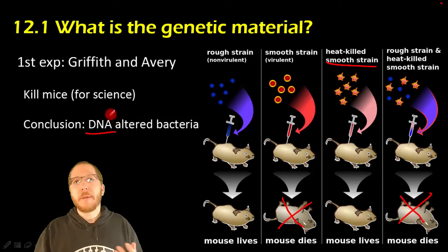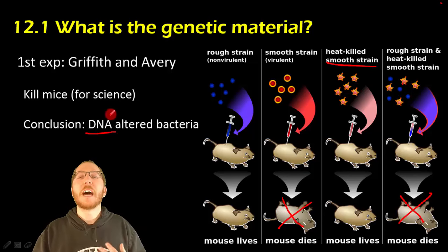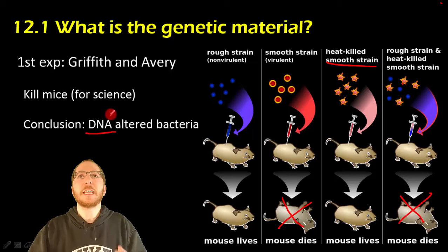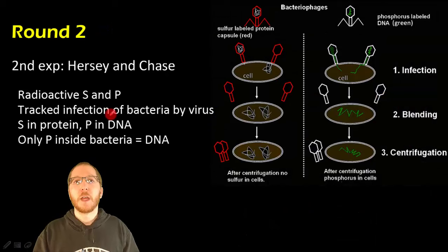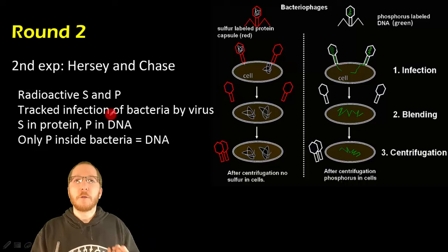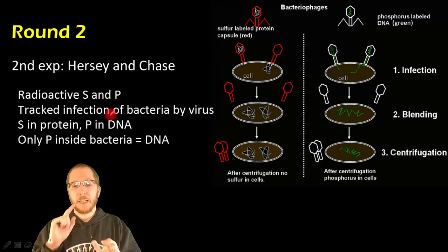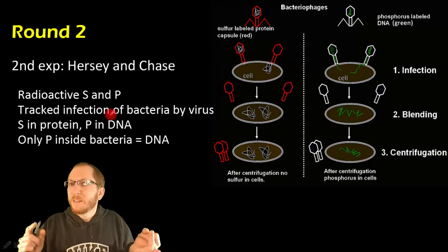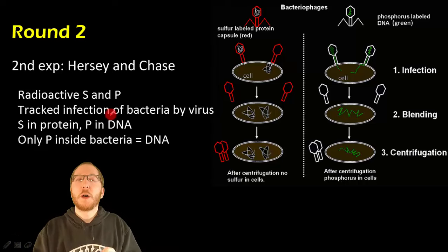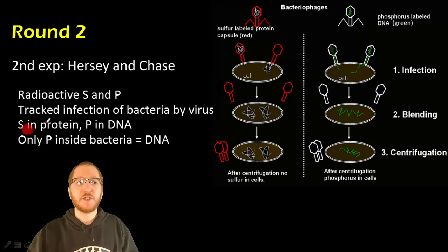People didn't automatically believe this — it was like strike one. Many still wanted more evidence because proteins seemed more diverse and a better candidate for genetic material. Scientists Hershey and Chase came along and noted that viruses contain only protein and DNA. They proposed radioactively tagging the proteins using radioactive sulfur, since sulfur is found only in proteins.